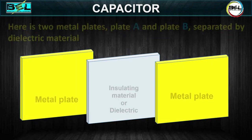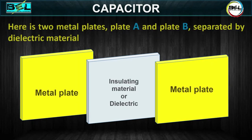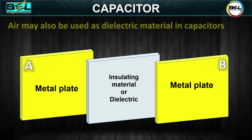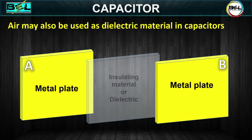Here are two metal plates — plate A and plate B — separated by dielectric material. Air may also be used as dielectric material in capacitors.